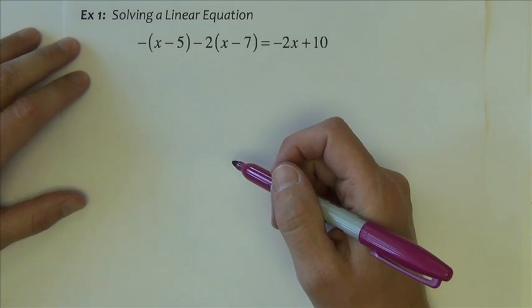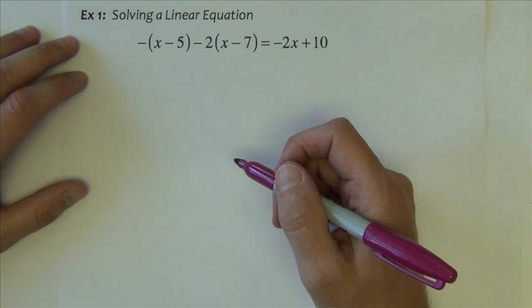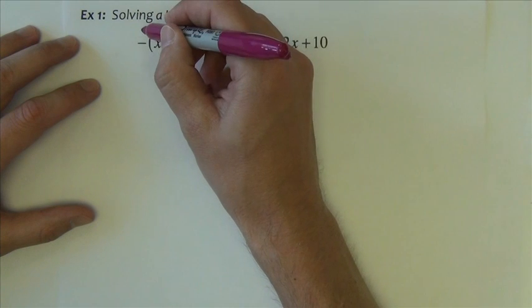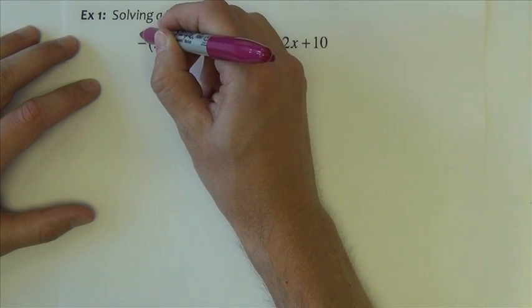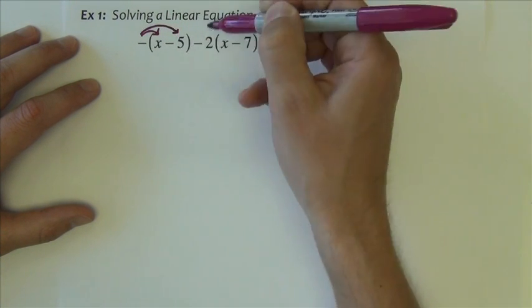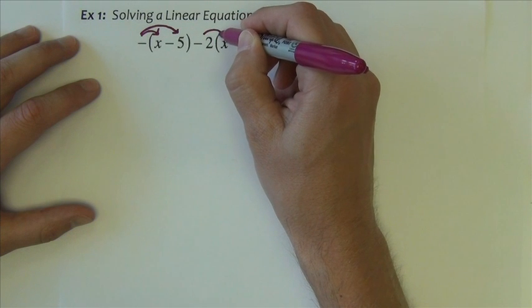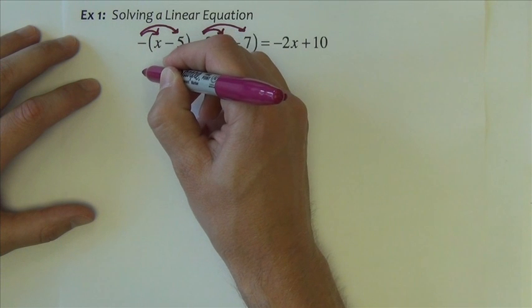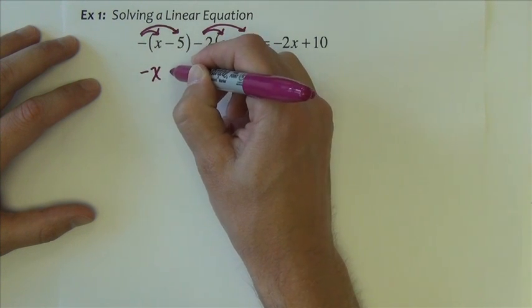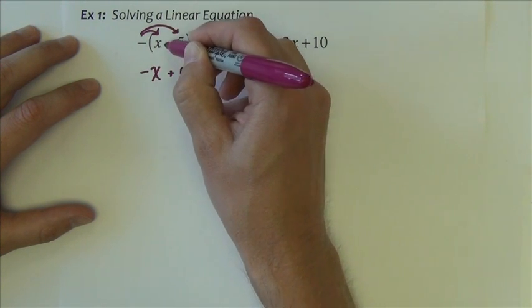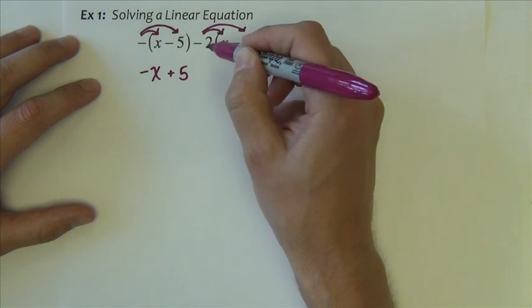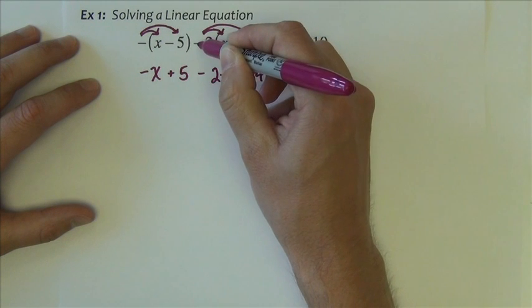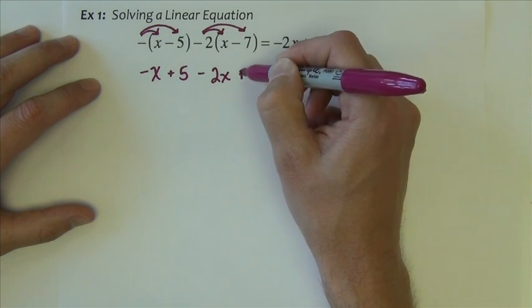In this first example, a standard linear equation to solve for the variable x, we're going to begin with the distributive property. The negative sign distributed into this quantity and the negative 2 distributed into this quantity. Distributing and multiplying by negative 1 makes negative x plus 5, the two negatives make positive there, and makes negative 2x plus 14.